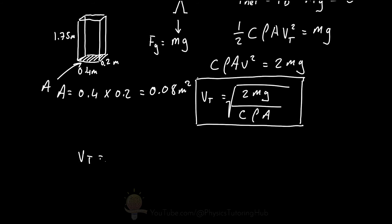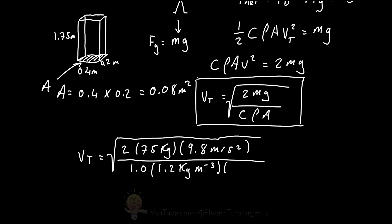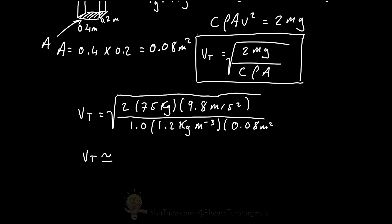Let's plug in some numbers. The area is 0.4 multiplied by 0.2, which equals 0.08 metres squared. The terminal velocity equals the square root of 2 times the mass — let's say 75 kilograms — times 9.8 metres per second squared, divided by the drag coefficient of approximately 1.0, times the density of air of 1.2 kilograms per metre cubed, times the area of 0.08 metres squared. This gives a terminal velocity of approximately 124 metres per second.